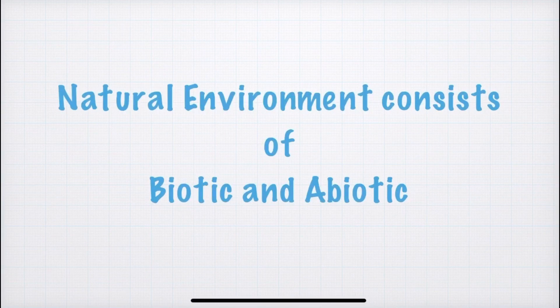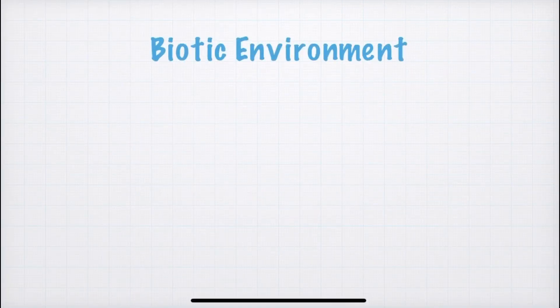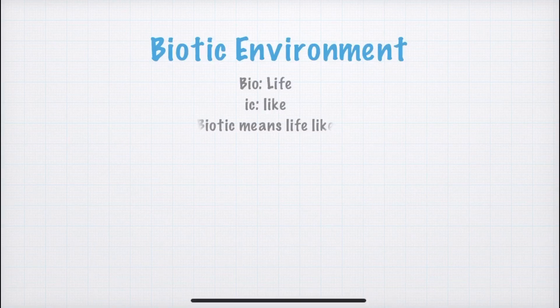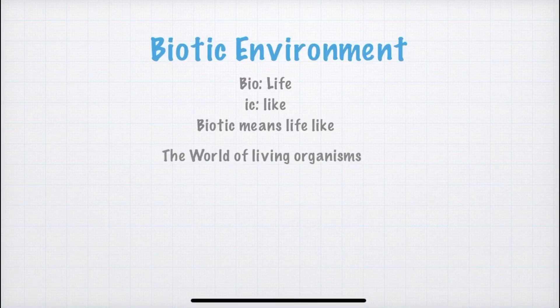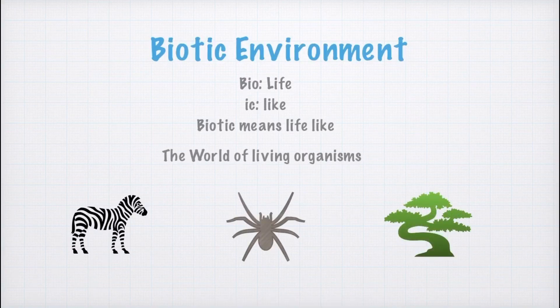Now students, pay attention. As I told you earlier, natural environment consists of biotic and abiotic components. So what is biotic environment? Biotic environment is the world of living organisms — for example, animals, insects, plants, and so on.